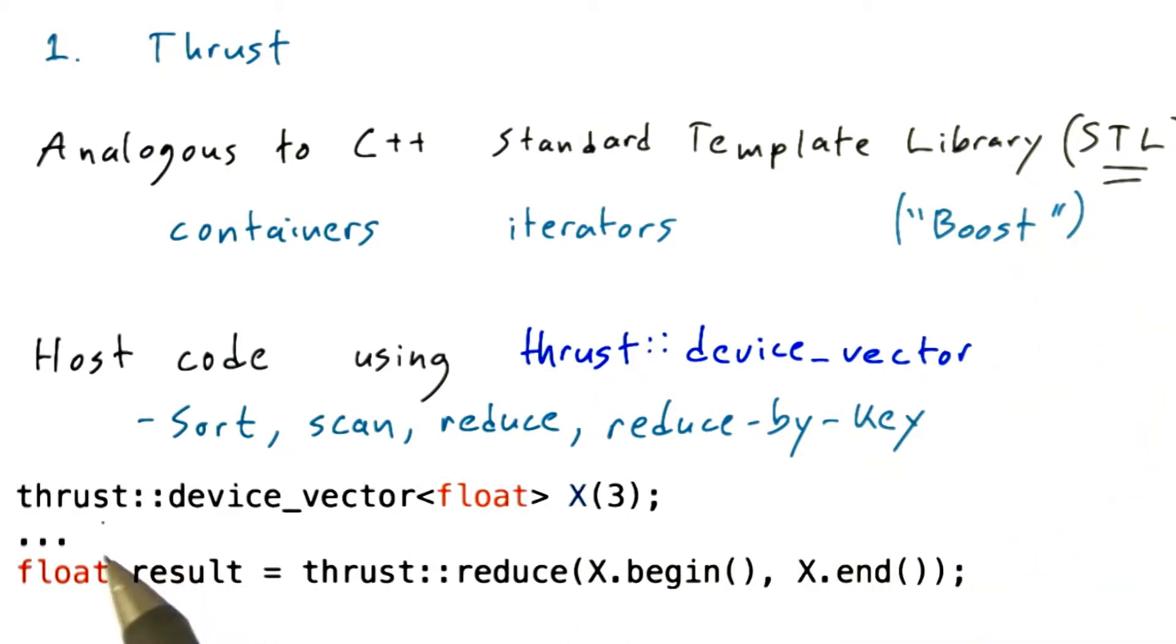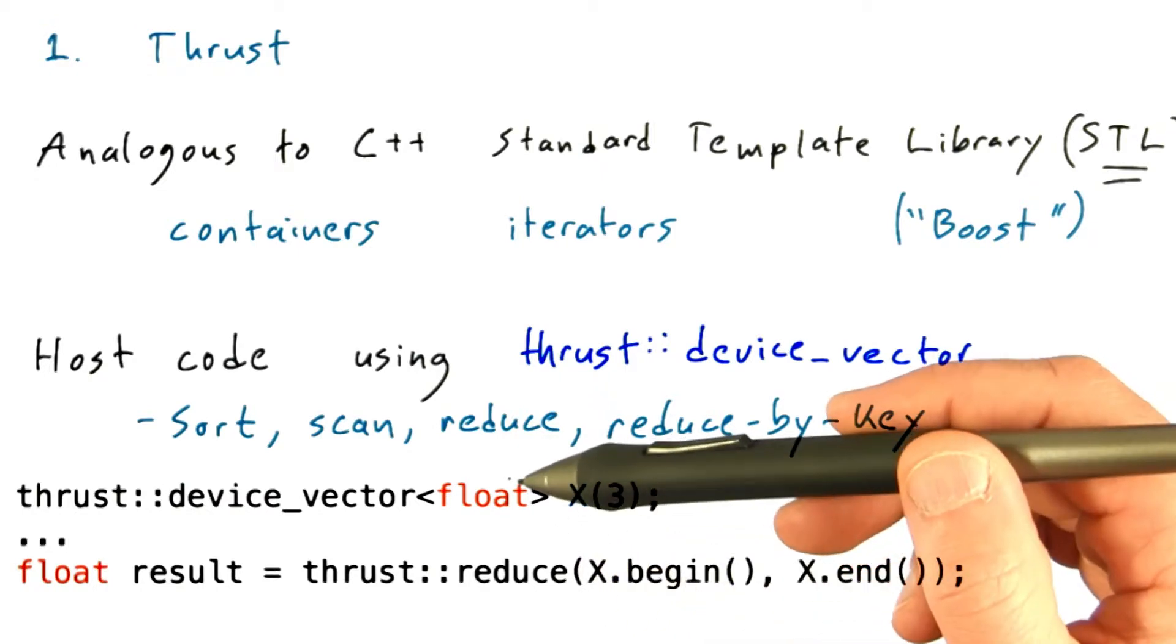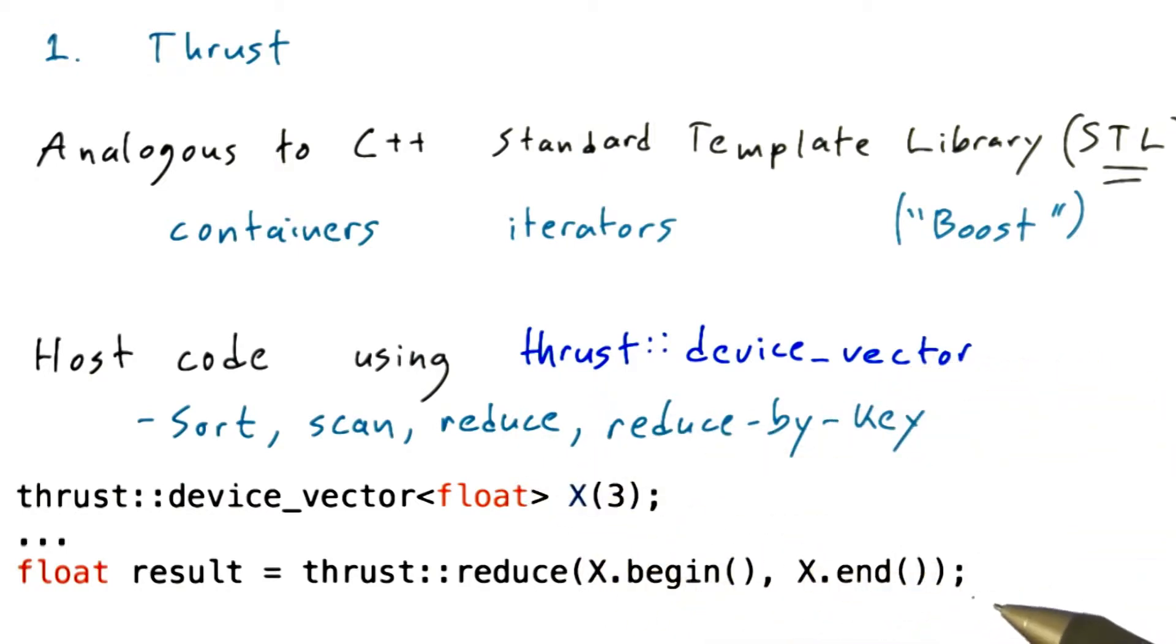For example, if you have a device vector x, in this case it's got three elements and it's of type float, then I can do a reduction on those three elements by just saying thrust reduce, pass in x.begin and x.end to indicate that I'm going to reduce over the entire range of the vector, and it will give me the result.